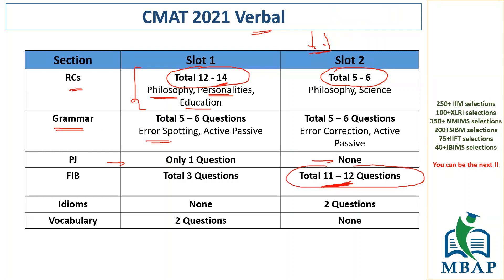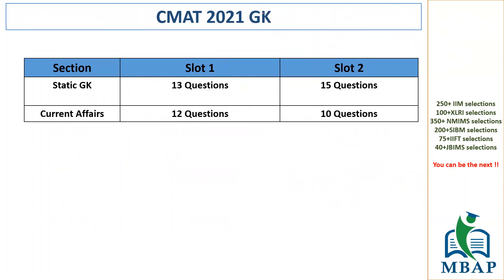Grammar was pretty much the same. Para-jumbles usually come less, and in slot two there were no para-jumbles at all, which actually changed a lot for slot two students. Standalone vocabulary questions were not there in slot two because they had so many FIBs instead. The number of RC questions has always fluctuated between five to twelve — that was the case this time as well, from one slot to another. GK was definitely difficult this time — above moderate or difficult level.